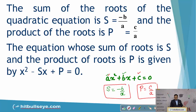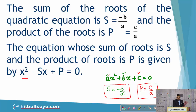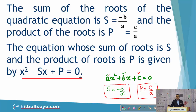If any equation has sum of roots as s and product of roots as p, then the equation will be given by x² − sx + p = 0. You just have to put the values of s and p in this equation.